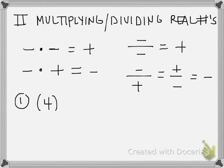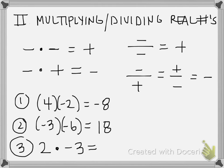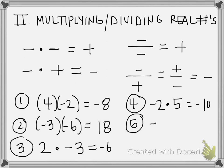So four times a negative two — the parentheses touching each other means multiplication — so four times negative two gives me a negative eight. Negative three times a negative six: a negative times a negative gives me a positive eighteen. Two times a negative three gives me a negative six. A negative two times a five — negative times a positive is a negative — so two times five gives me a negative ten. Negative twenty-four divided by a negative four gives me a positive six.